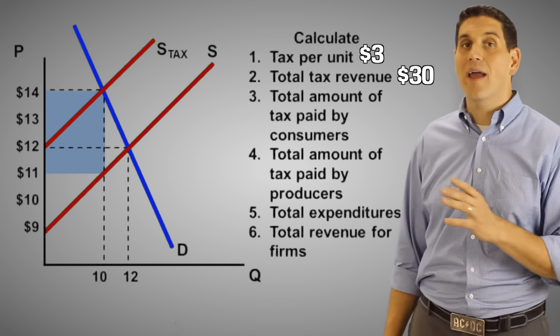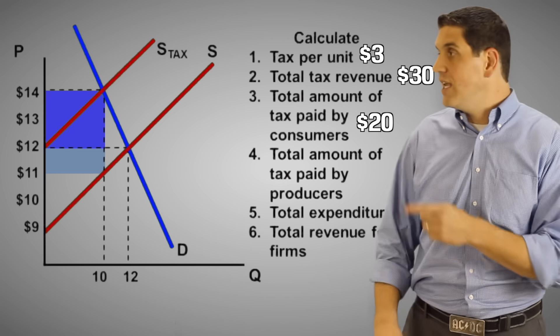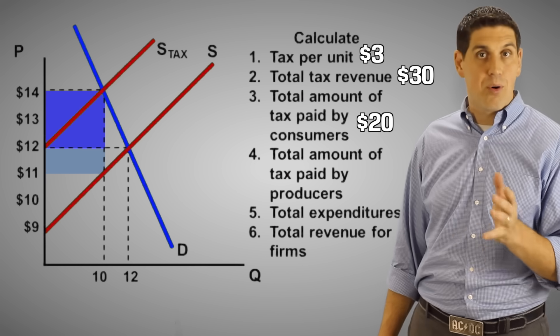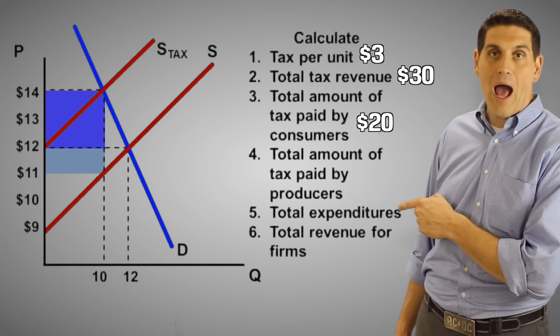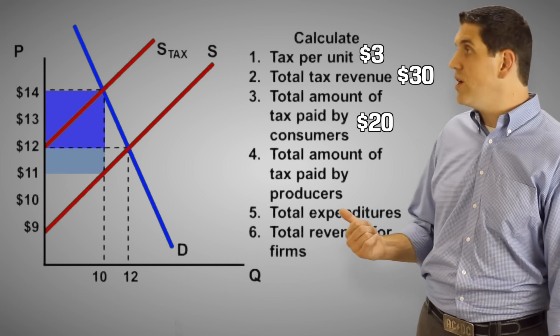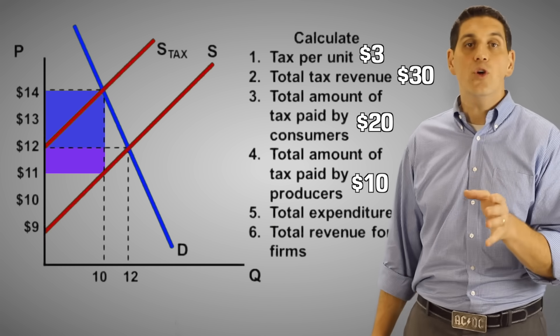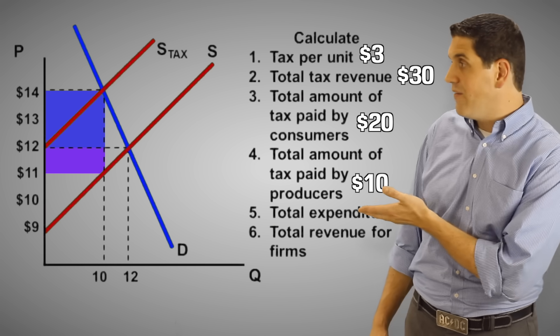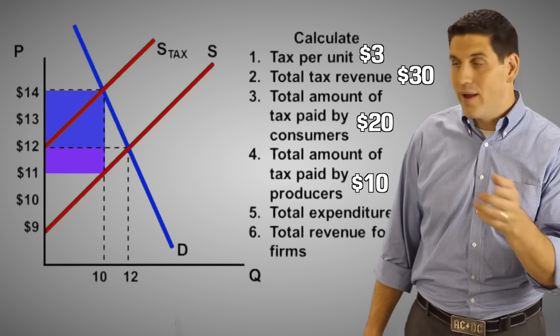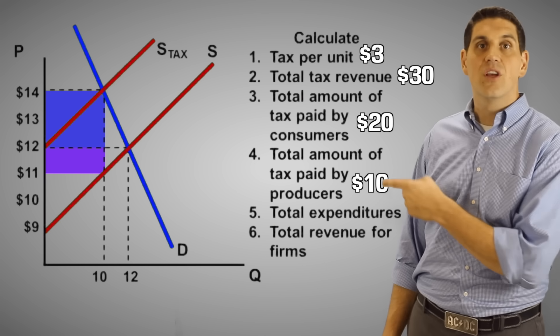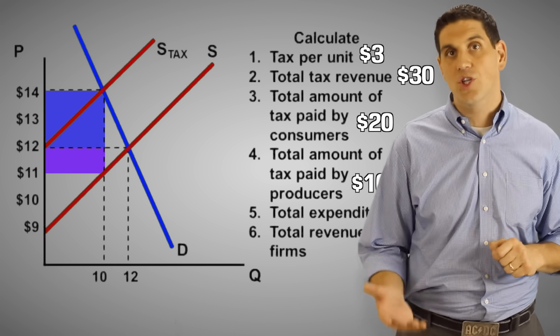The total amount of tax revenue paid by consumers is $20. This is the $2 more that consumers pay per unit times the 10 unit output. Since the total tax revenue is $30, then the tax that the producers must be paying must be 10 bucks. The producers used to get 12, now they only get 11. And so they get $1 less than before. 1 times 10 is the $10 of total tax revenue the producers pay.